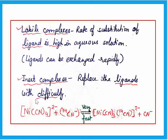In inert complexes, the ligands can only be replaced with difficulty. We call it an inert complex. This is the definition of kinetic stability: kinetic stability is related to the rate of substitution of ligands. If substitution happens quickly, it is labile; if it happens slowly, it is an inert complex.